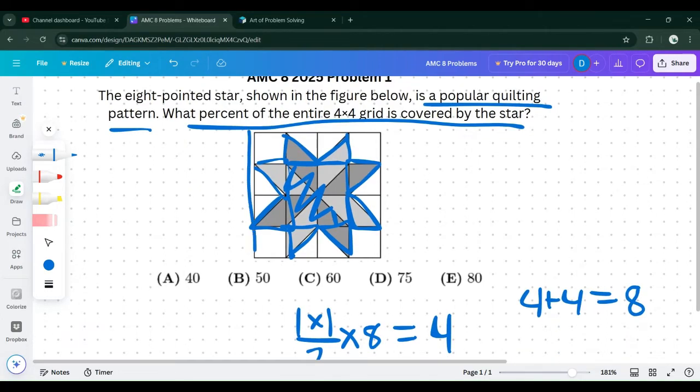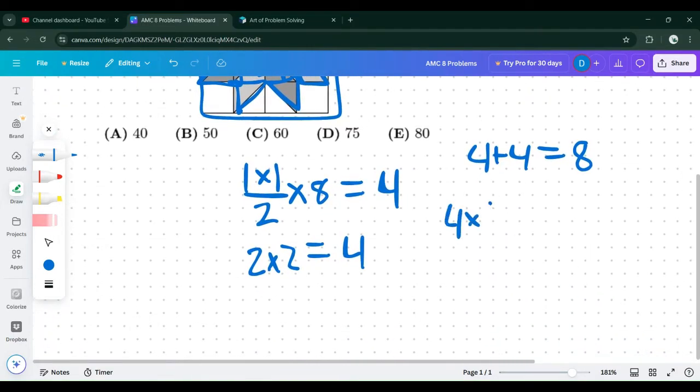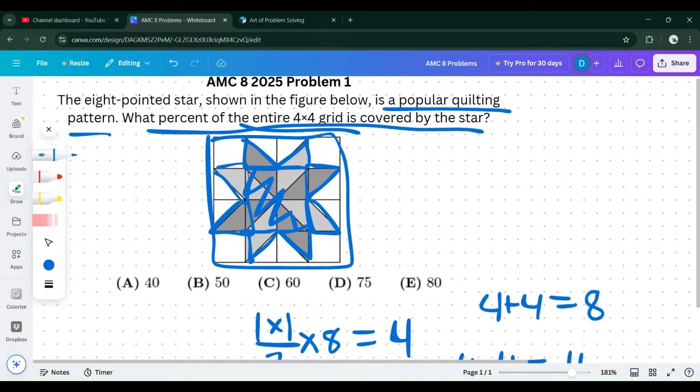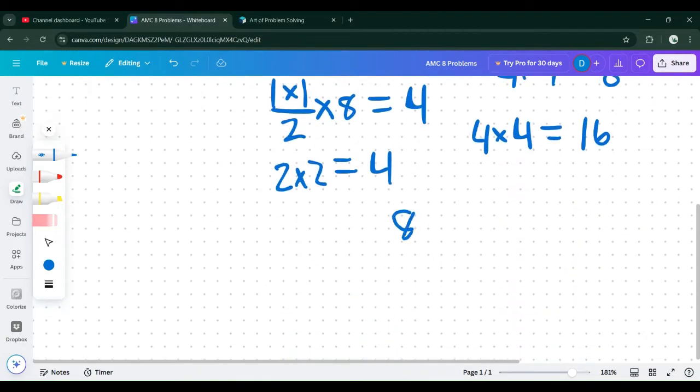It's asking for the percentage of the entire four by four grid. The four by four grid has an area of 16. Four times four equals 16. That's 50% because it's eight over 16, which is one half or 50%.